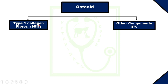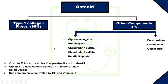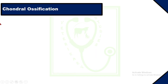The bone has osteocytes, lacunae, and other bony structures. Osteoid consists of 95% type 1 collagen fiber and 5% other components. Other components include glycosaminoglycan, proteoglycan, chondroitin 4-sulfate, chondroitin 6-sulfate, keratin sulfate, and bone proteins which include osteonectin and osteocalcin. Vitamin C is required for the production of bone or osteoid. Within 8 to 10 days, osteoid transforms into a bony matrix. This conversion is controlled by growth hormone and vitamin D.